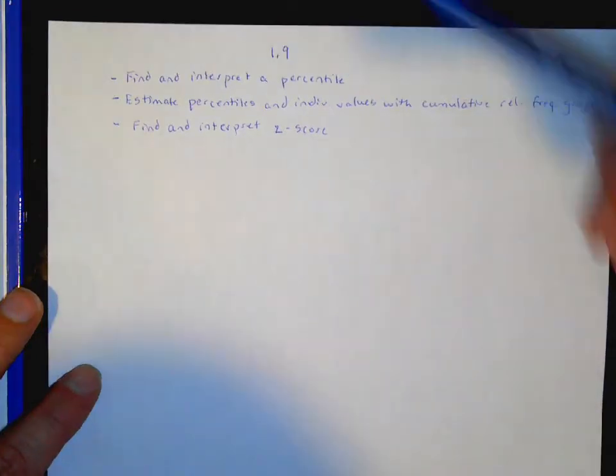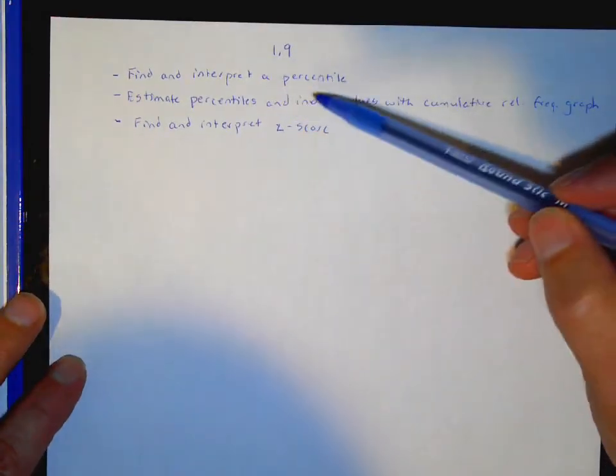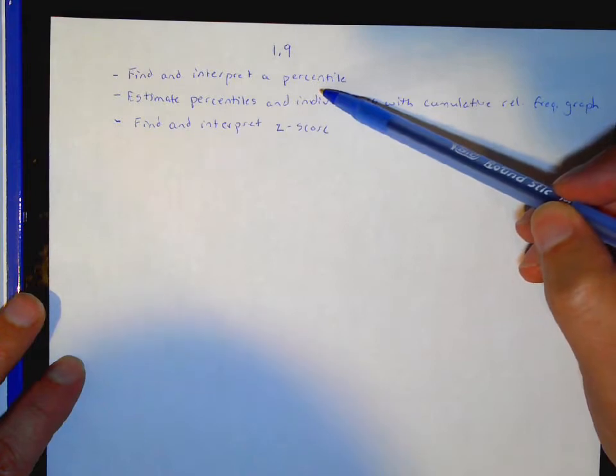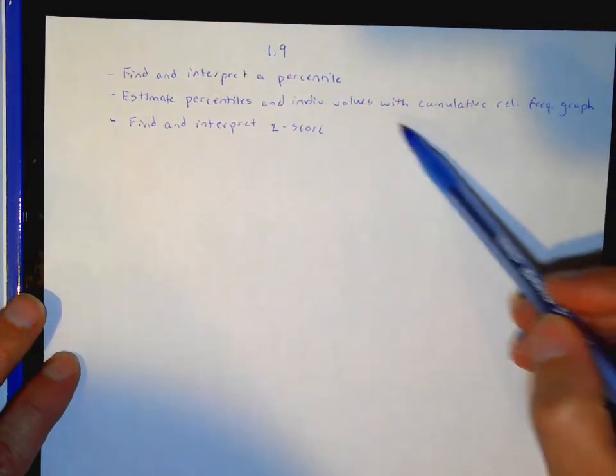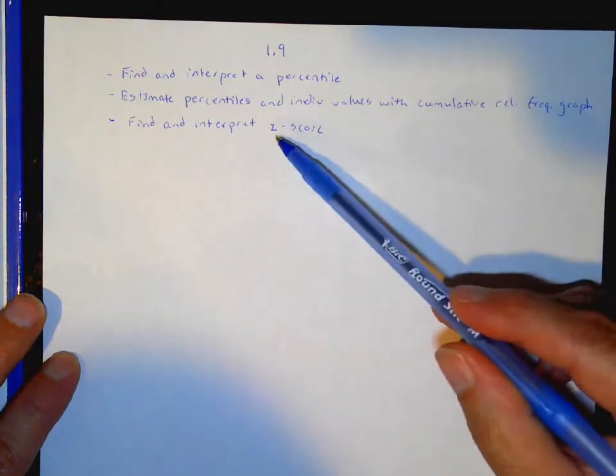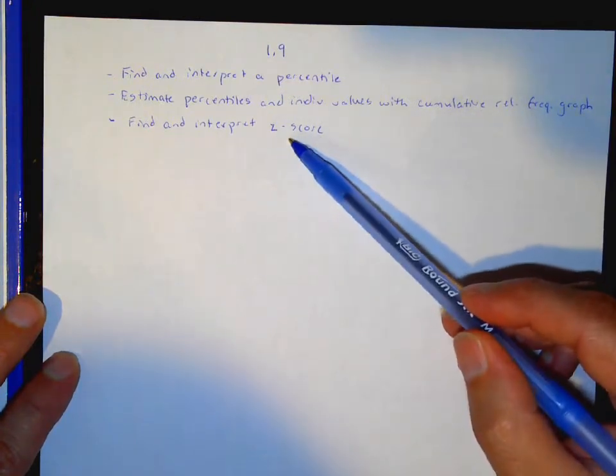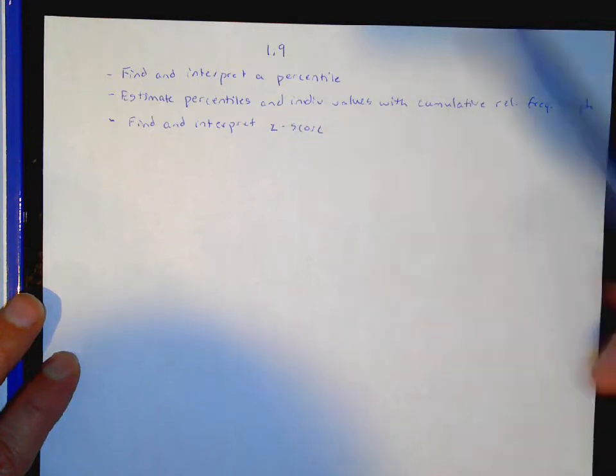Today we're going to do notes 1.9. We will talk about a percentile and what that is. We will estimate percentiles and look at cumulative frequency graphs. And we'll also talk about a z-score. So some review from Algebra 1 there with these two.